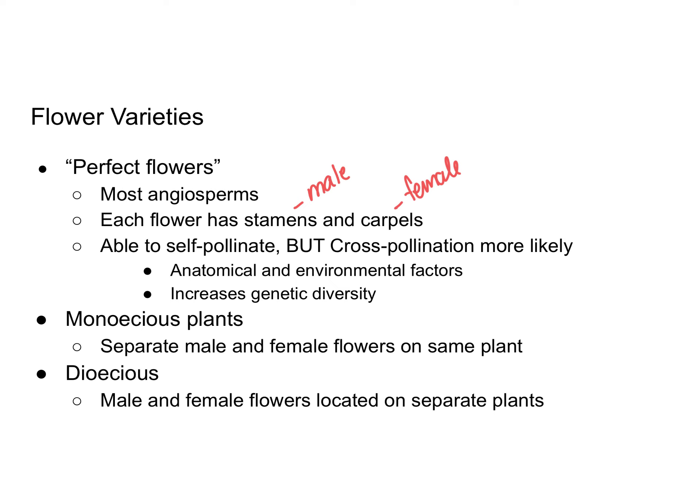Because both male and female structures are present, these plants are able to self-pollinate, which ultimately leads to self-fertilization. However, cross-pollination is more likely and typically more beneficial. It's beneficial because it helps increase genetic diversity. With self-pollination you're keeping the same genes already in the plant, but cross-pollination takes pollen from one plant and transfers it to a different plant, bringing in genes from another plant and mixing them to create a new genetic combination.